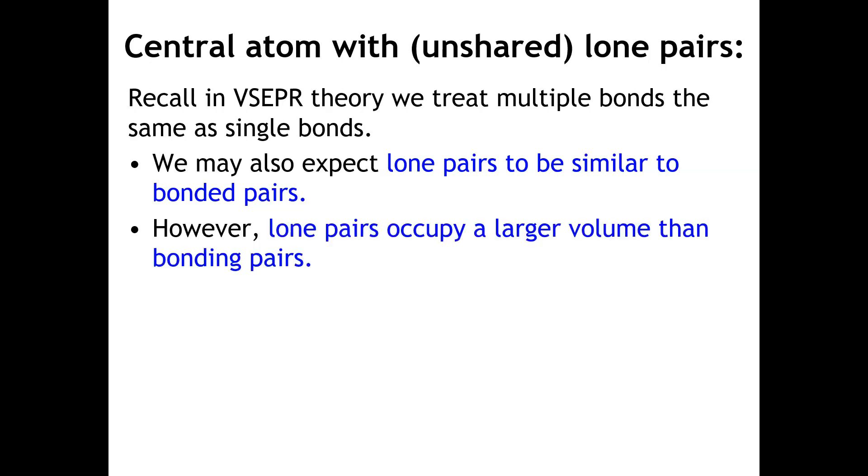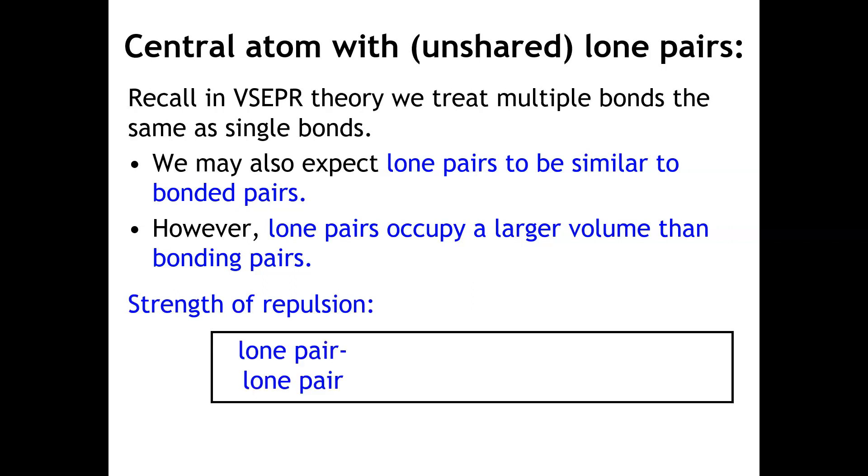Lone pairs do in fact occupy a larger volume than bonding pairs, and this is because there's not a nucleus on the other side attracting those electrons and holding them in place. The strength of repulsion that we'll see is that if you have lone pair-lone pair next to each other, that repulsion is going to be much greater than lone pair-bonded pair, then bonded pair-bonded pair.